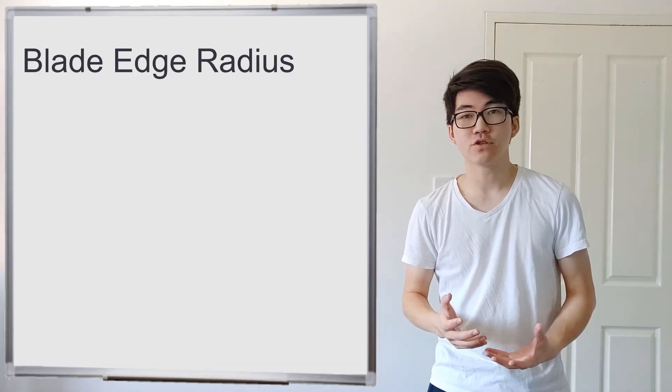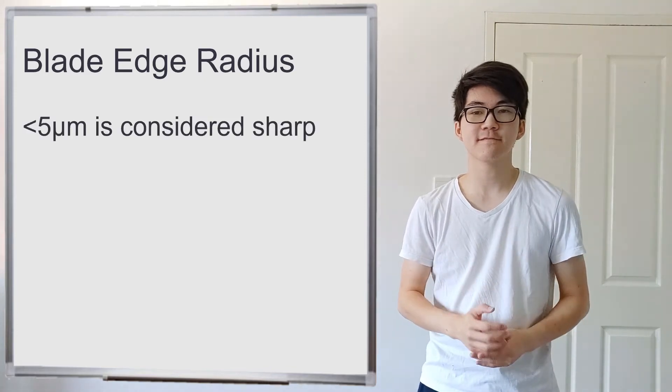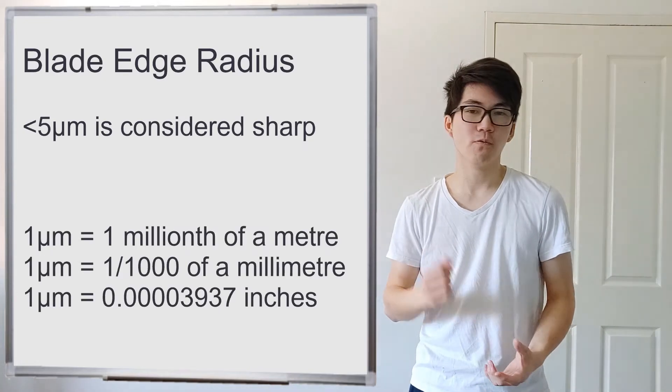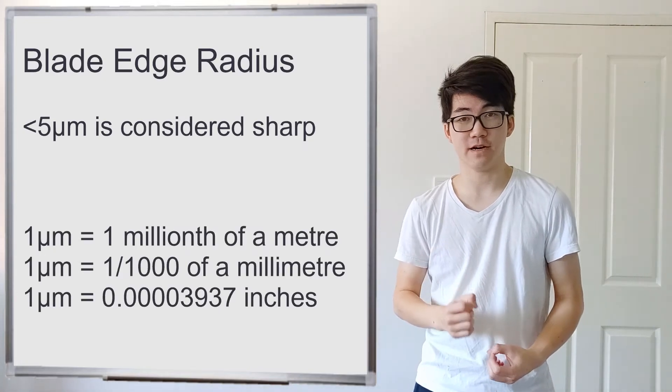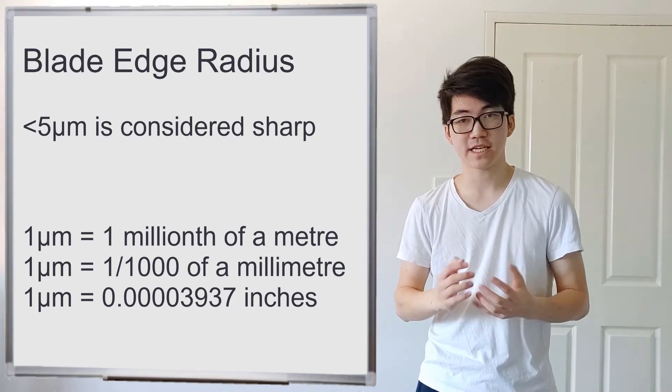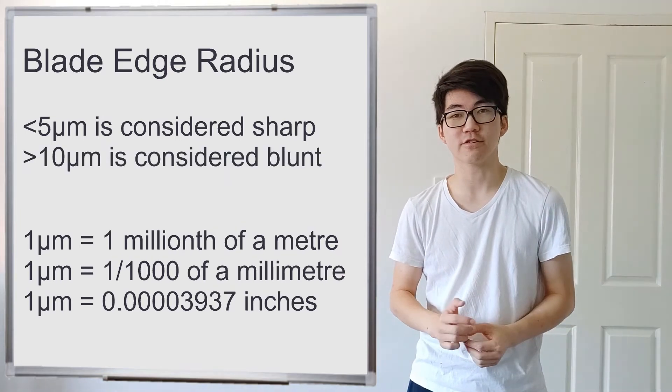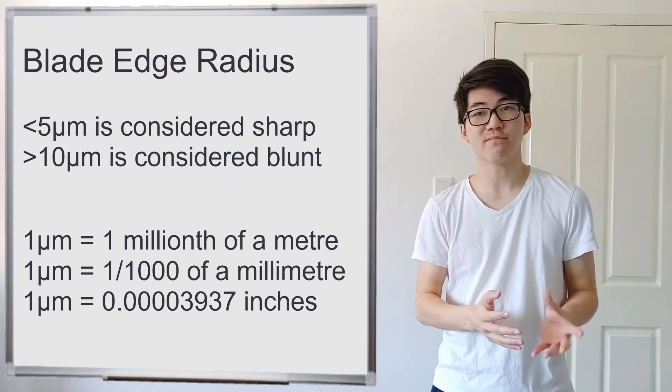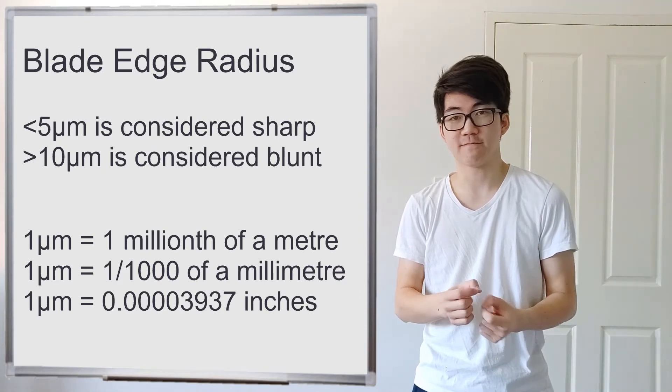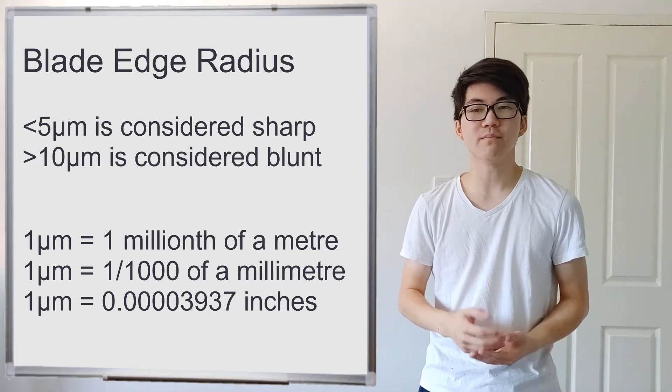So what blade edge radius would be sharp and what would be dull? So generally speaking, a blade edge radius less than 5 micrometers would be sharp. What's a micrometer? One micrometer is one millionth of a meter, or one thousandth of a millimeter. So it is microscopic. You cannot see it. And a dull knife would be probably around 10 micrometers. So the difference between 5 micrometers and 10 micrometers is double, but you can't tell the difference with your naked eye because 5 micrometers difference is not visible to the normal person.